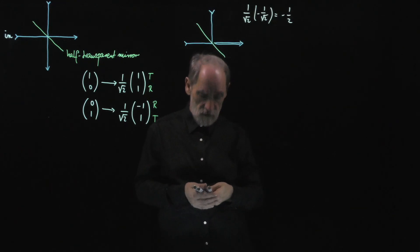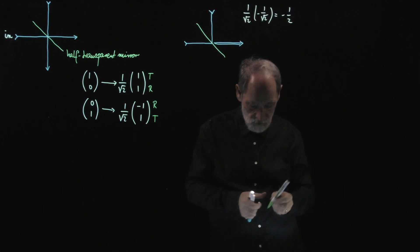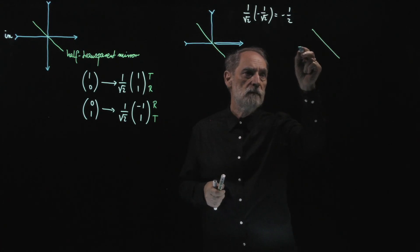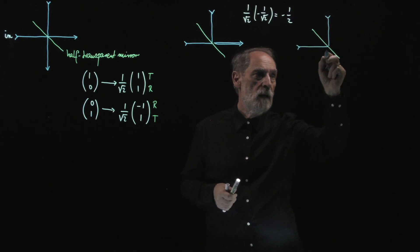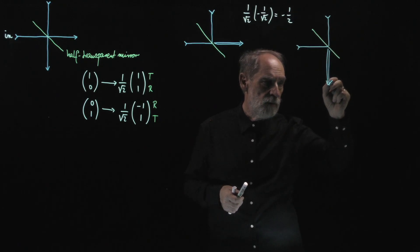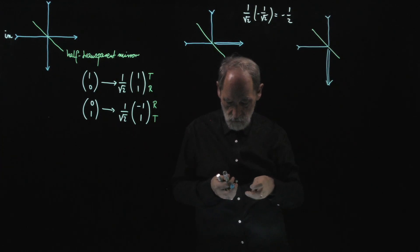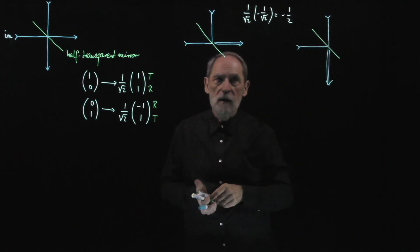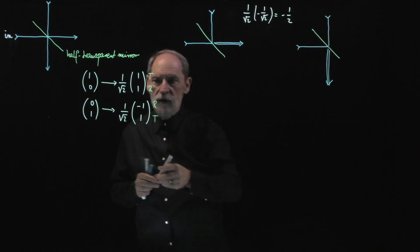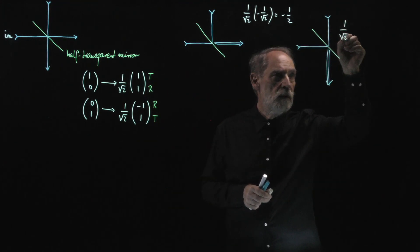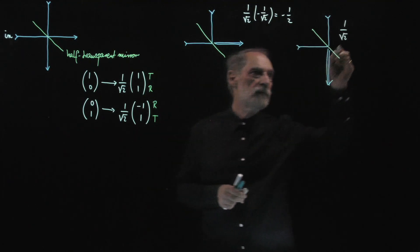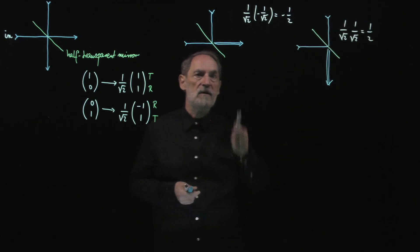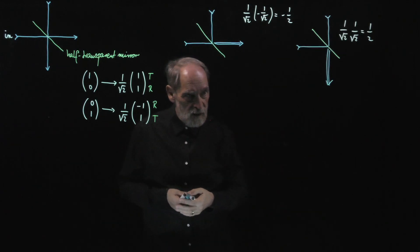Another situation is both photons arriving — one from the left, one from the top — and both emerging at the bottom. Again, one photon is reflected and one is transmitted. Following the same logic, we look at the reflection amplitude and the transmission amplitude, and the product is one half — the same magnitude as the previous case. So these two processes happen with the same probability.